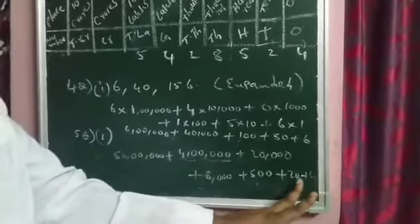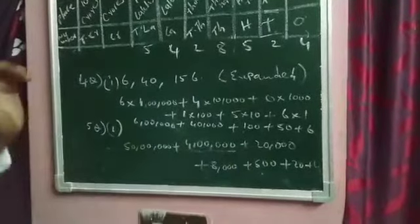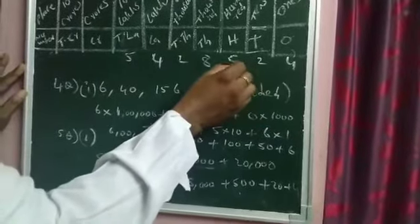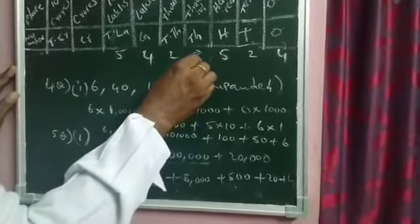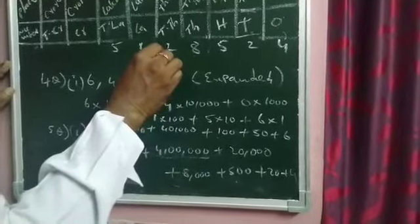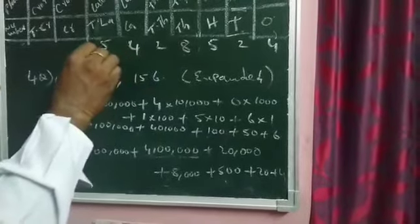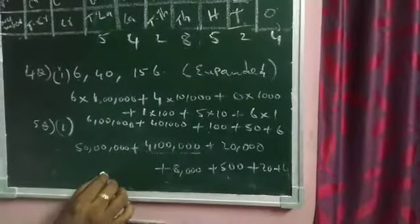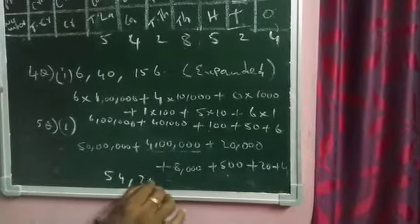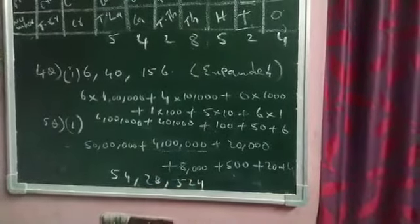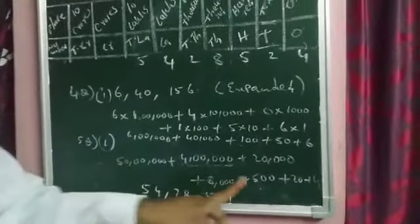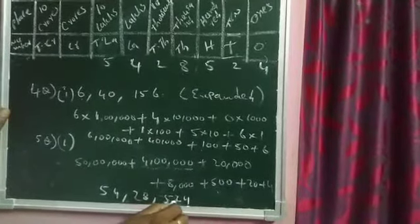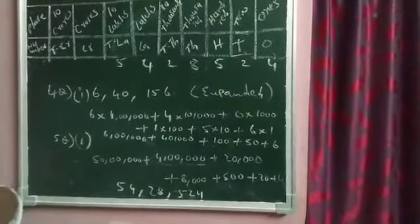Arrange from right: ones, tens, hundreds, thousands, ten thousands, lakhs, ten lakhs. The digits are: 4 in ones, 2 in tens, 5 in hundreds, 8 in thousands, 2 in ten thousands, 4 in lakhs, 5 in ten lakhs. So the short form is 54 lakhs 28 thousand five hundred and twenty-four. Try the remaining sums the same way.